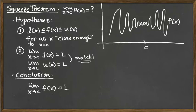We can define a lower function L(x) that's always below the function we care about near x equals c, and an upper function U(x) that's always above F(x) near x equals c. That's the bounded part, hypothesis 1, where we have F between L and U.